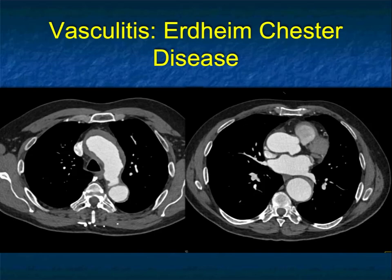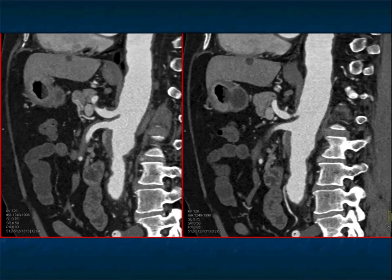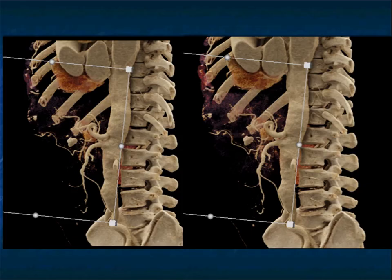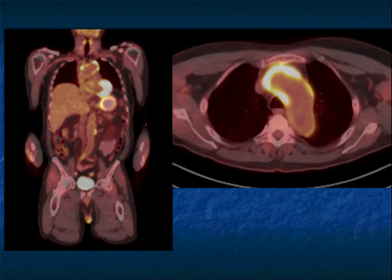Another entity we are seeing a reasonable number of cases of is Erdheim-Chester disease. Erdheim-Chester disease gives you thickening of the aorta, which looks like a large vessel vasculitis and can also look very much like intramural hematoma. It's often very extensive, with involvement of the areas around the kidney. You see the thoracic aorta, abdominal aorta, celiac, and SMA involved. These patients will often, on PET, have increased activity, and monitoring response means looking at PET activity and seeing how it drops off with therapy.